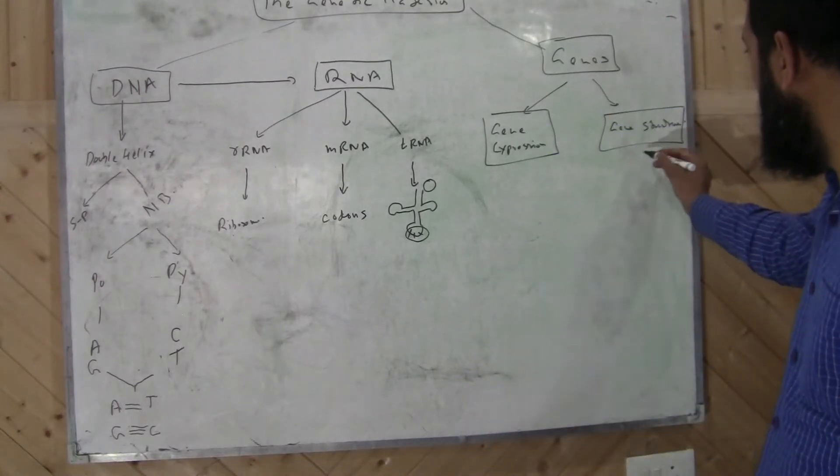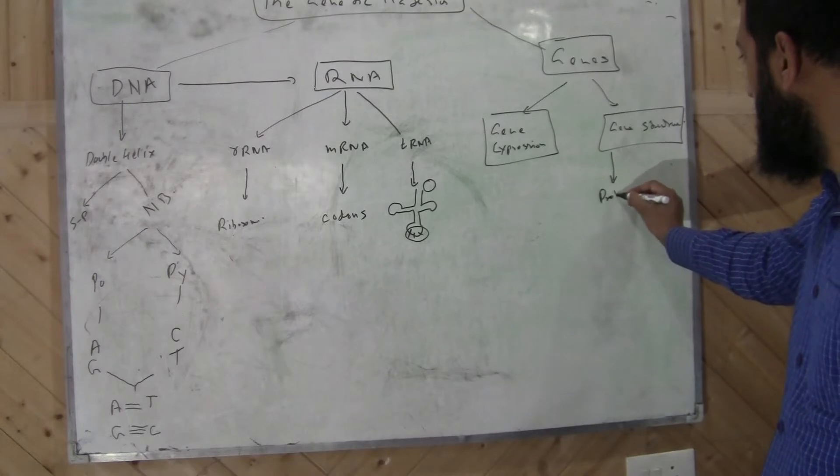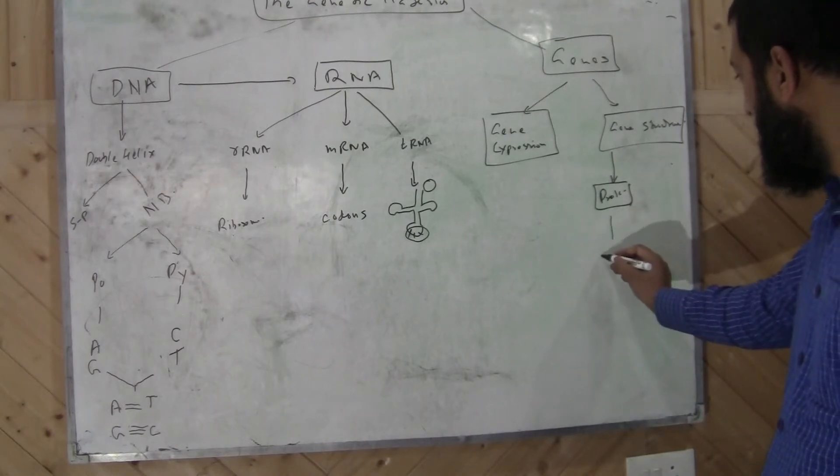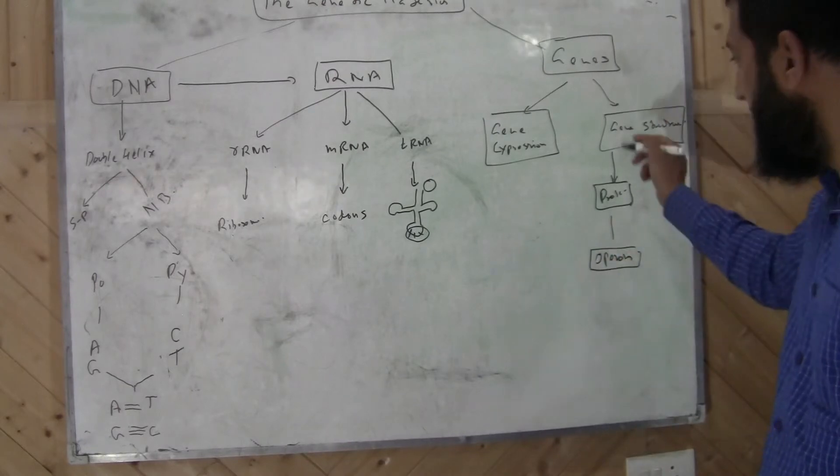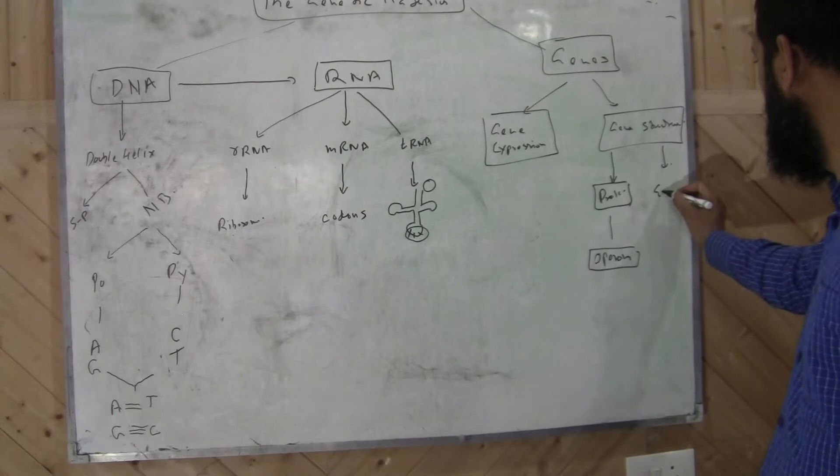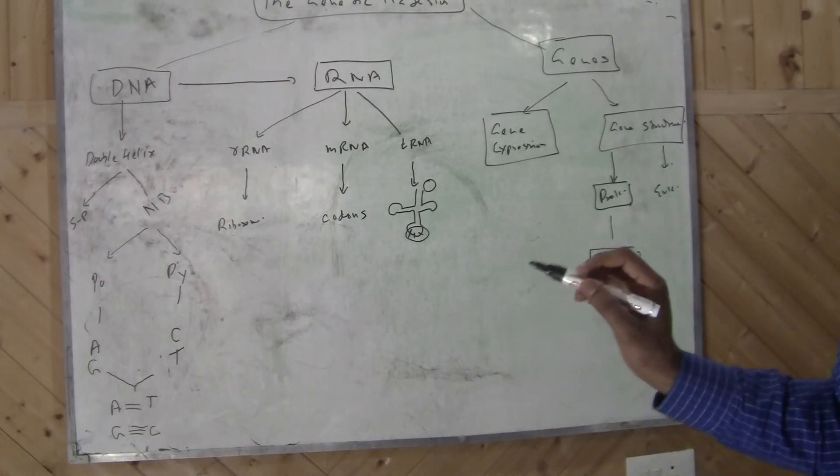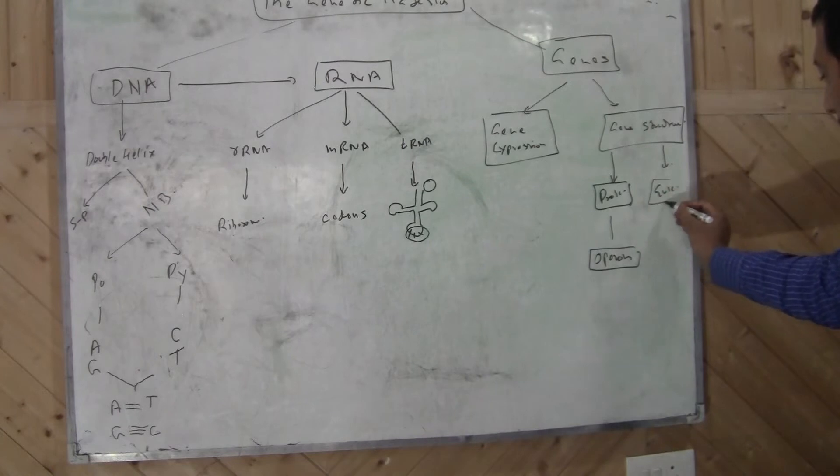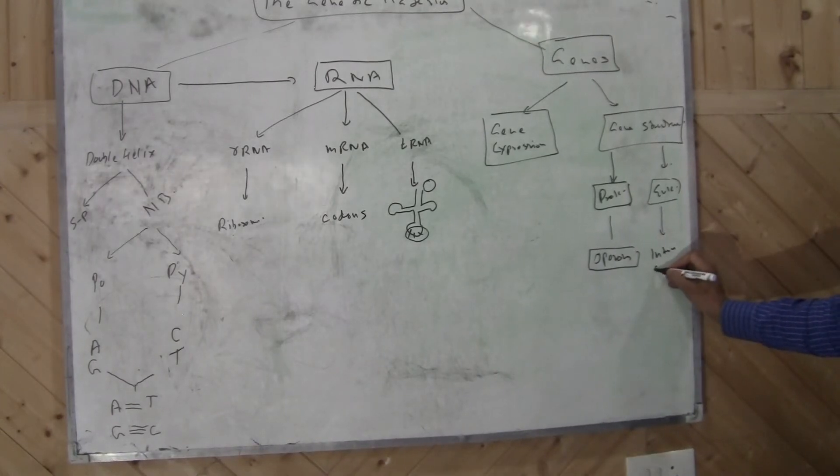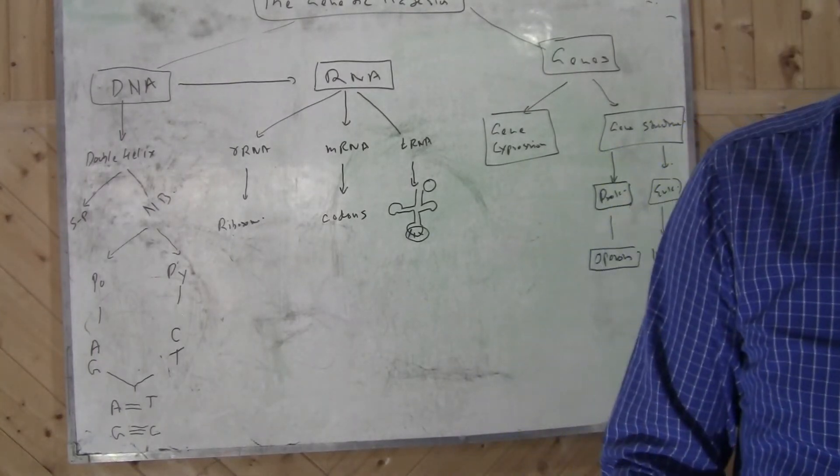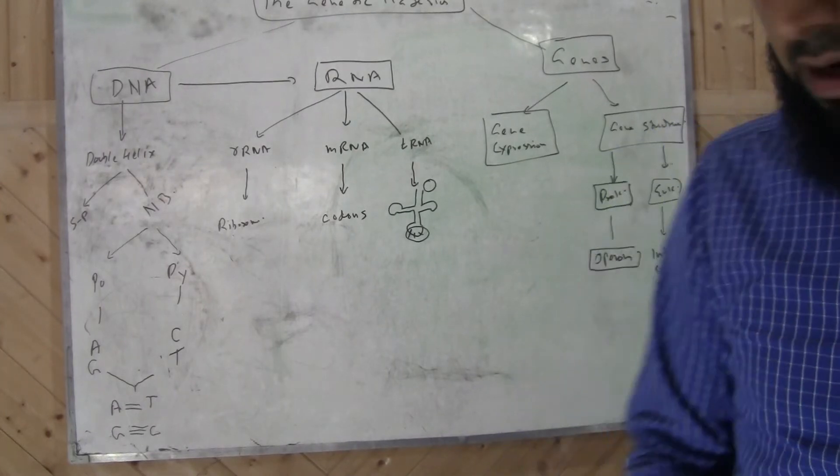So in case of prokaryotes, it's quite simple. The genes are grouped in form of operons. But in case of eukaryotes, it's complex. And these genes have introns or intervening sequences, they have exons, they have 5-prime cap, they have 3-prime poly-A tail.